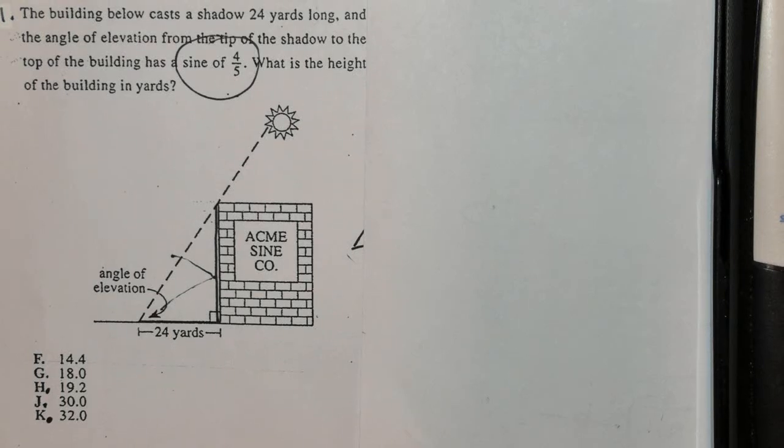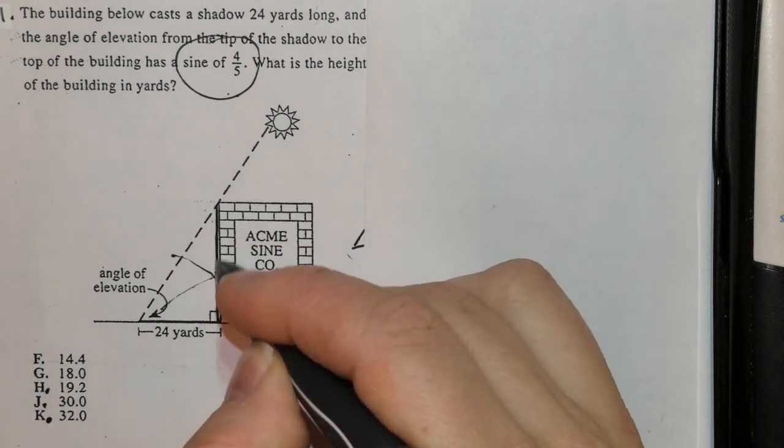The building below casts a shadow 24 yards long, and an angle of elevation from the tip of the shadow to the top of the building has a sine of 4/5. Remember, sine is opposite over hypotenuse. What is the height of the building? We want to know this length.